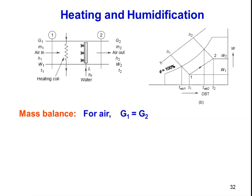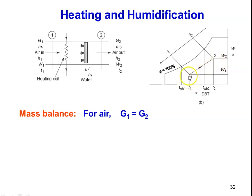Heating and humidification is the opposite of the previous process. At the inlet: G1 (mass of air), M1 (mass of water vapor), H1 (enthalpy), W1 (specific humidity), T1 (temperature). There are two components: a heating coil and a humidifier with a water spray system. Adding water vapor by spraying increases specific humidity. On the psychrometric chart, heating is a horizontal line, humidification is a vertical line, so the combined process from 1 to 2 is an inclined line.